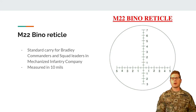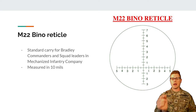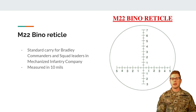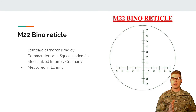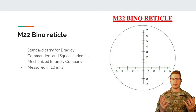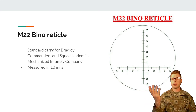This is an example of the M22 binocular reticle, which is commonly carried by Bradley commanders and squad leaders in a mechanized infantry company. Each hash mark is measured in 10 mils, so in between the 1 and 2 is a 5-mil hash mark. We would measure 10 mils, 15 mils, 20 mils — they do that so as not to clog up the reticle with information that blocks your field of view from seeing the target.